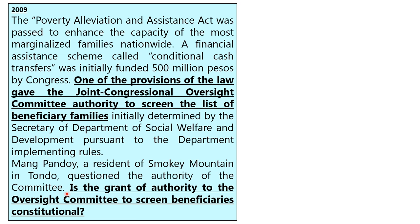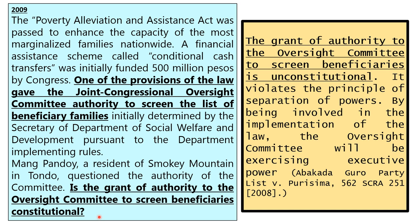Is this provision constitutional? The answer is definitely no — that is unconstitutional. Because of the principle of separation of powers, the work of the legislative department is only to make laws. Who implements and executes the law? That is the work of the executive branch. Therefore, this is unconstitutional. Congress cannot screen the list of beneficiary families.